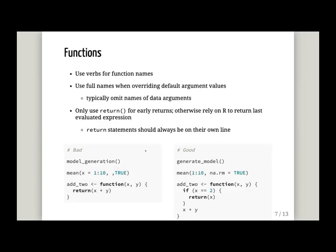On writing functions — use verbs for function names, so for example instead of 'model generation' you say 'generate model.' When you write arguments for a function and override default argument values, you should use explicit names. But you omit the name of an argument which is a data argument — a common standard argument. For illustration, if you use the mean function, the first argument is X, which is just a common data argument — a vector for which you want to find the mean. So you don't specify 'X equals,' but when you override the default value of optional arguments like 'na.rm,' then you do specify that you're overriding it.